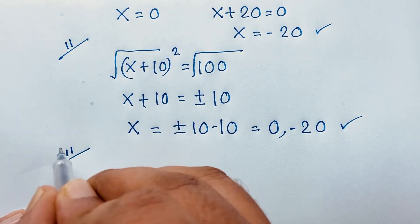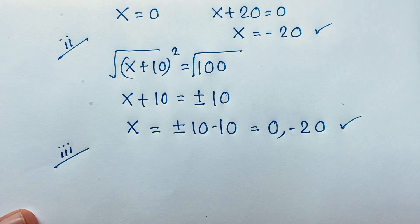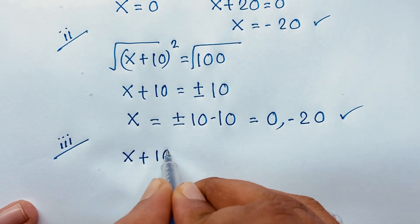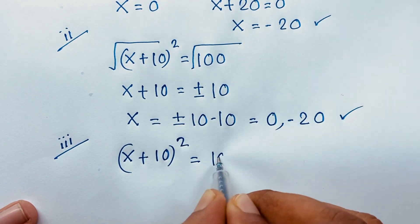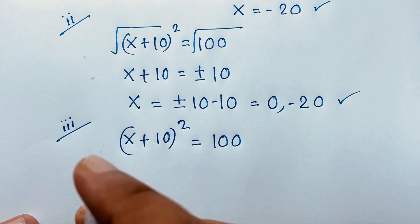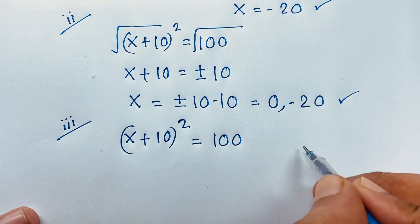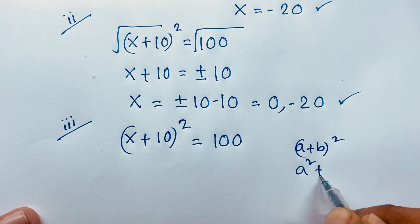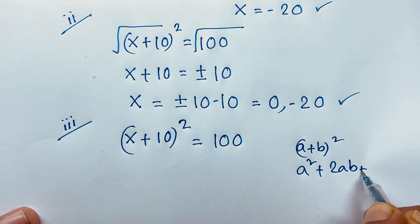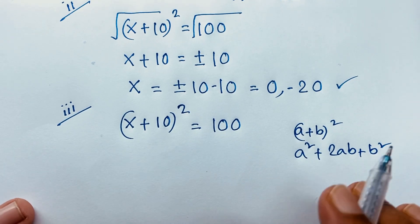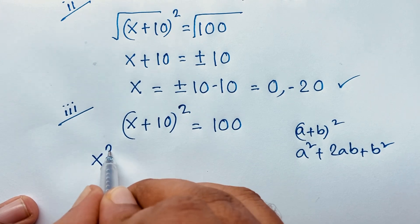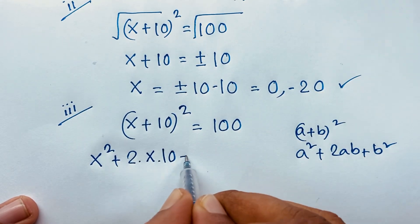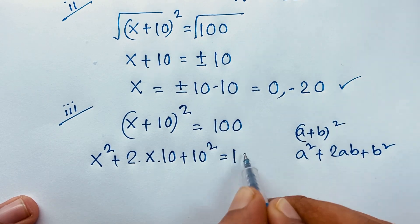This is the third method. I solve this question using the third method: (x + 10)² = 100. We know that (a + b)² = a² + 2ab + b². If I apply this math formula here, it will be x² + 2(x)(10) + 10² = 100.